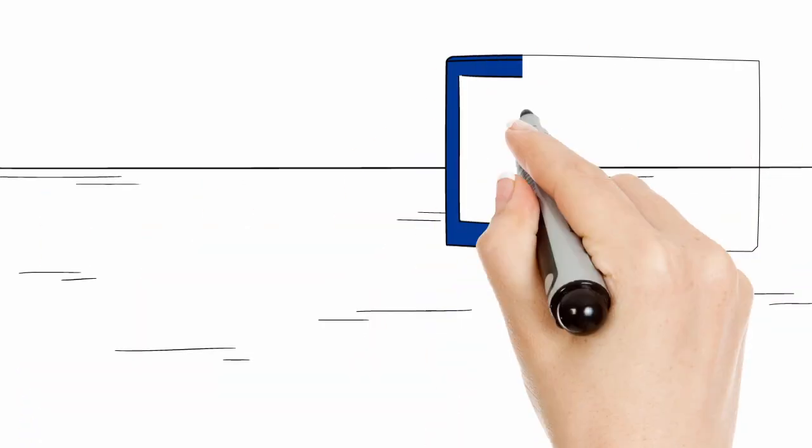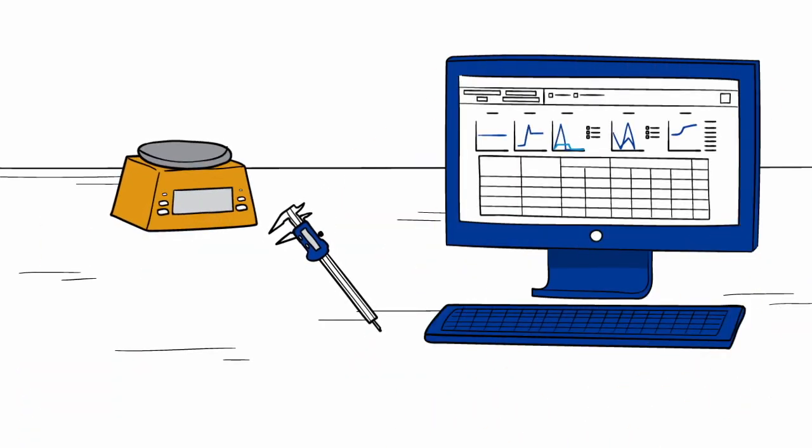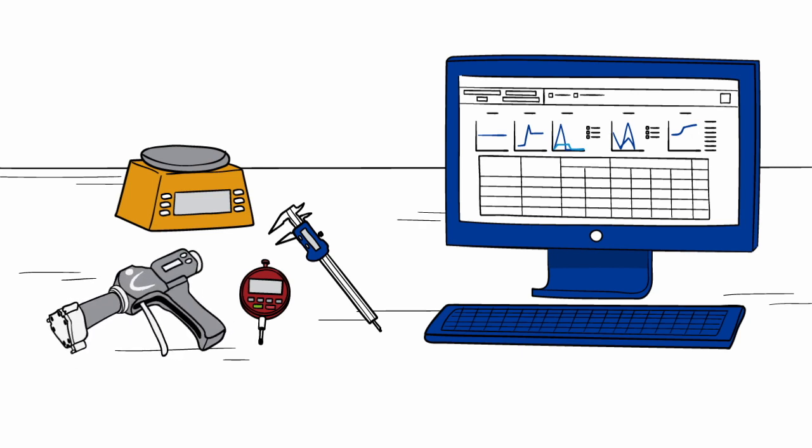What's the best way to record measurements from a caliper, lab scale, bore gauge, or other device to track quality or produce a report?